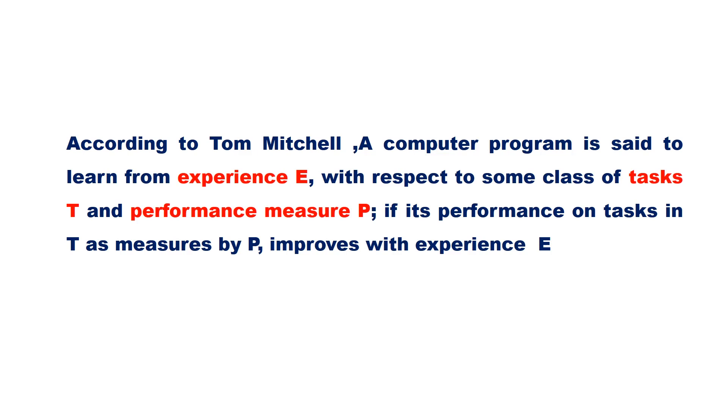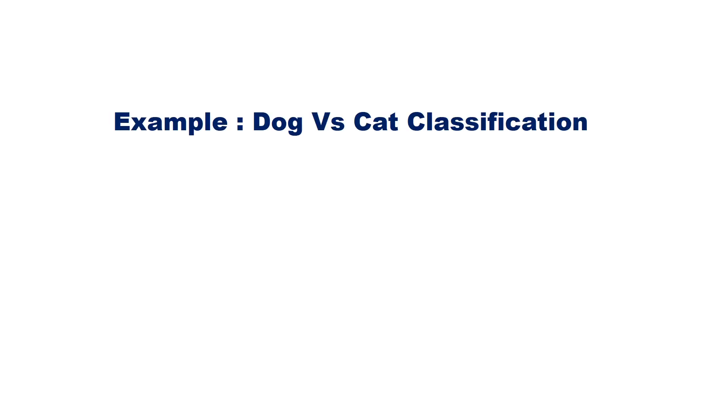Let us use an example. Suppose we need a system to classify images of cats and dogs. The task here is to classify a given image as either cat or dog.